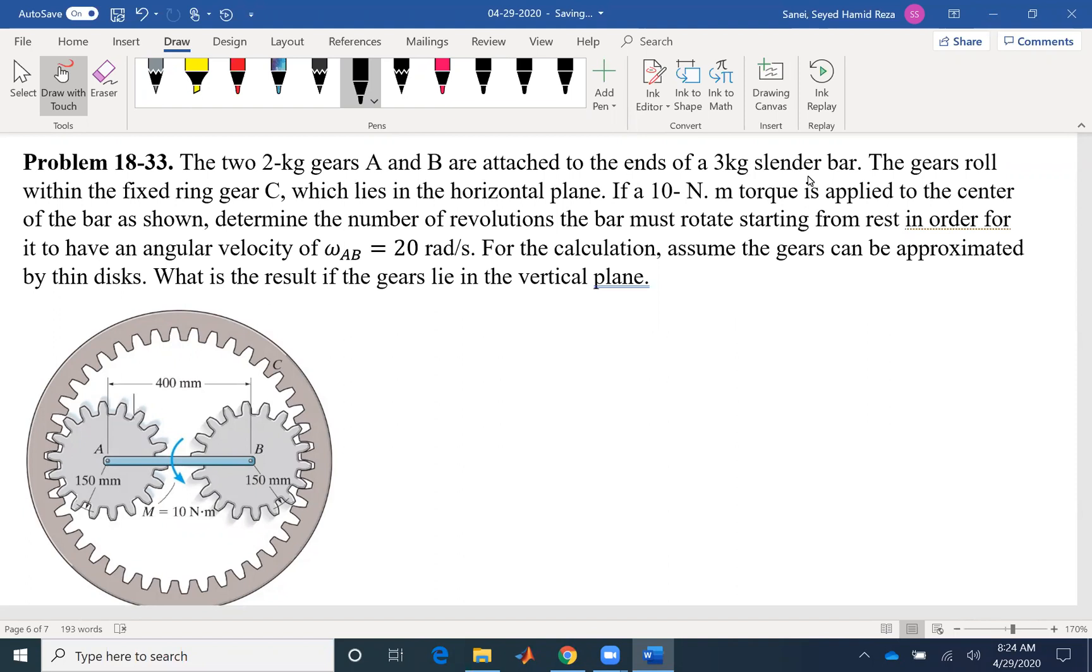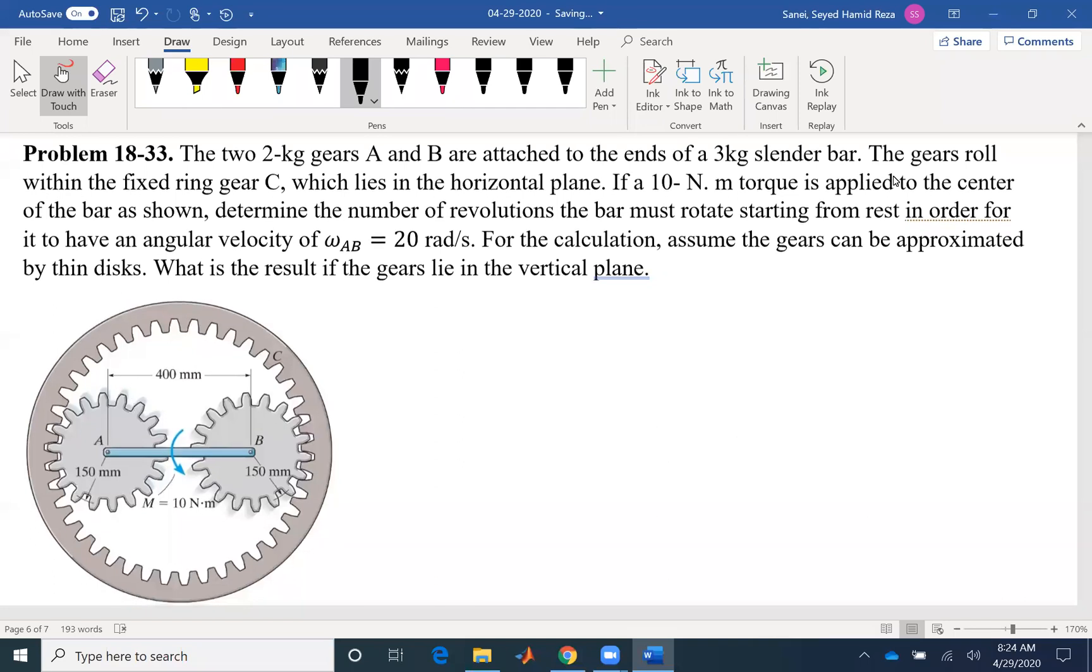The gears roll within the fixed ring gear C. Probably that's the most important part of this question. The gears are rolling and also the ring gear C is fixed, which means that this one is not moving at all. That's going to help us significantly and also the rolling.